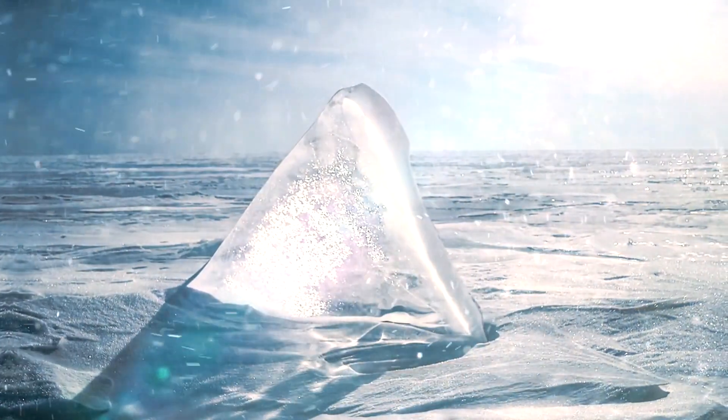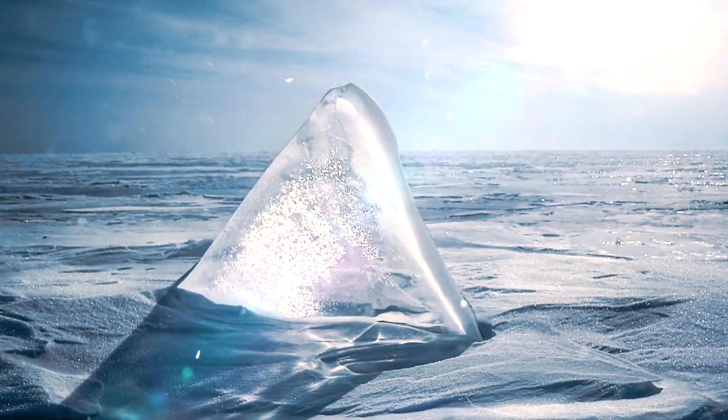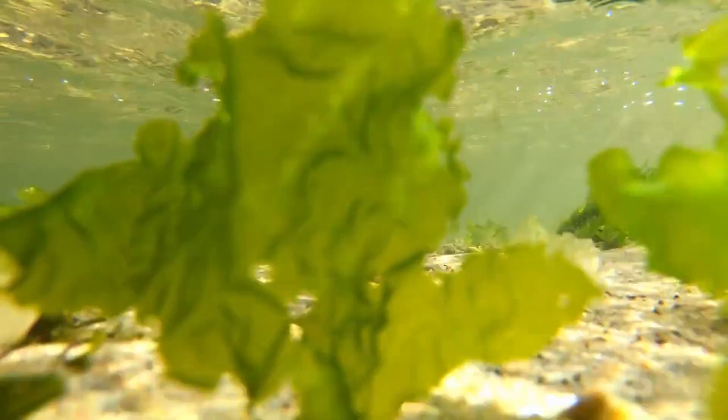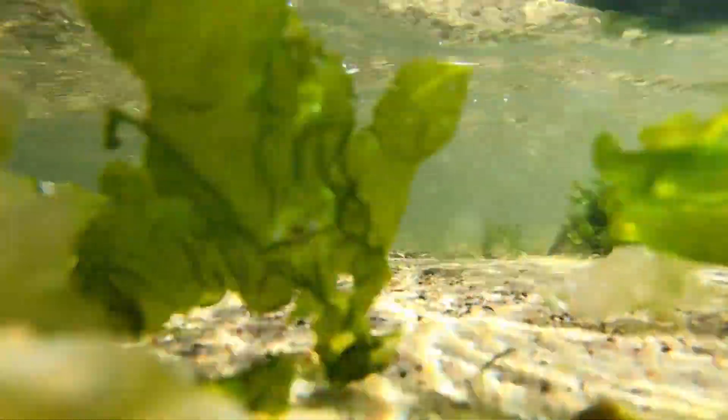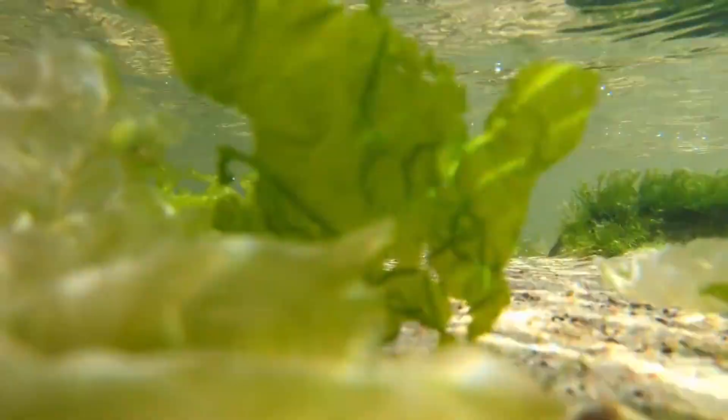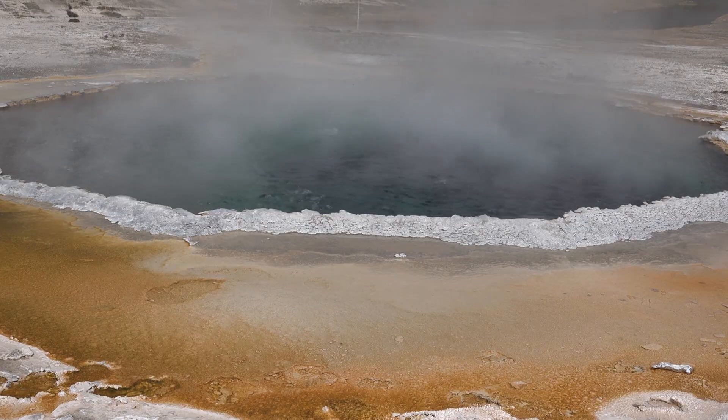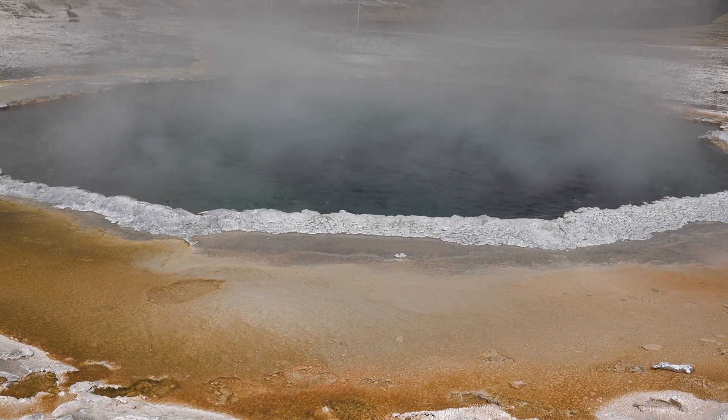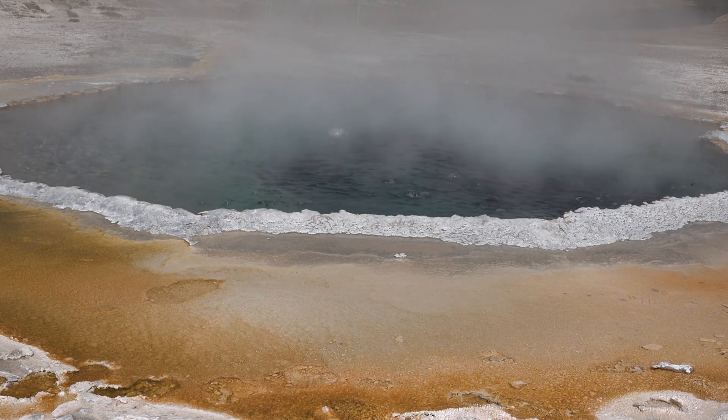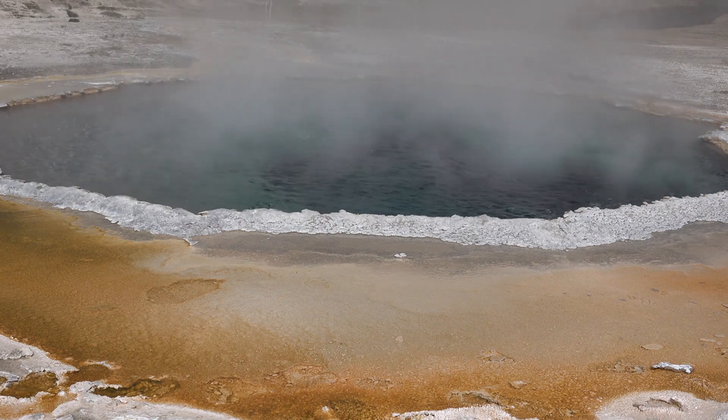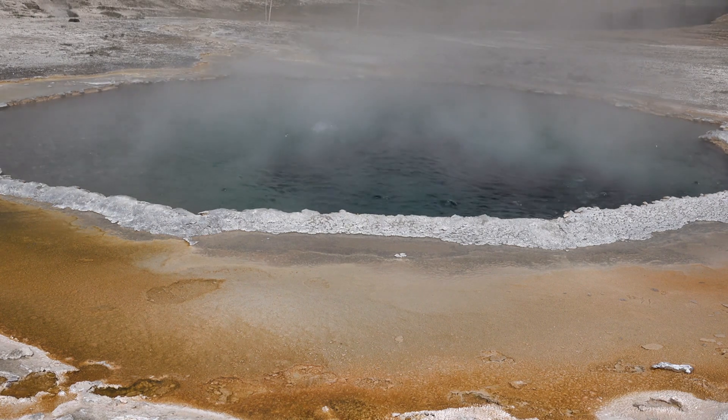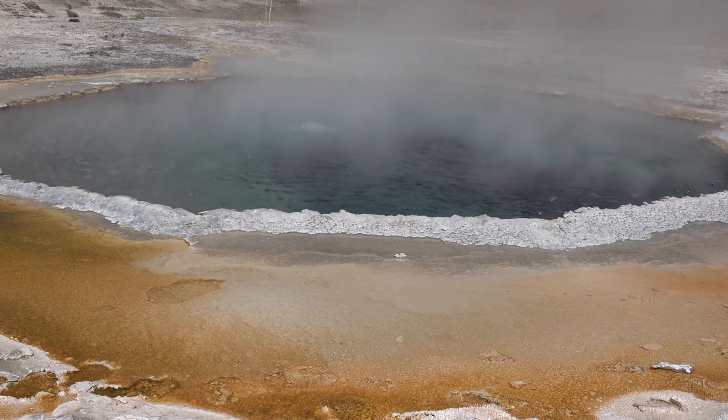The extreme climatic conditions of the Cryogenian posed significant challenges to life. Photosynthetic organisms, which depend on sunlight, would have faced extreme stress due to ice coverage blocking sunlight penetration into oceans. However, evidence suggests that some microbial life persisted. Cyanobacteria and other microbial mats may have survived in isolated refugia, such as geothermal hotspots, ice-free regions near hydrothermal vents, or under thin ice sheets where limited photosynthesis was possible.